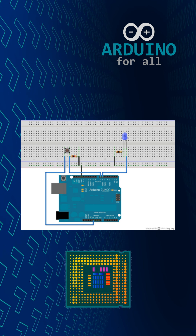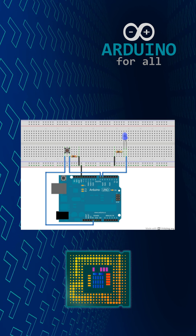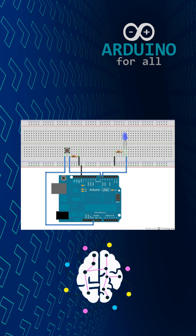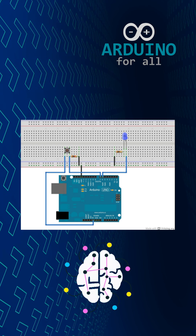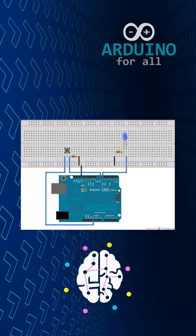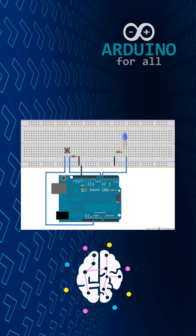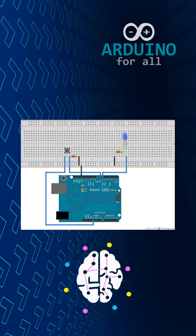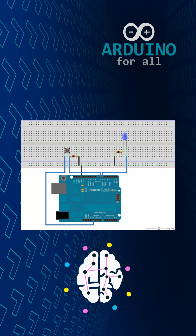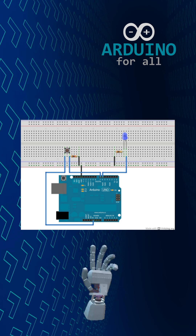When a pin is configured as an output, the microcontroller sends that signal. It writes a high or low voltage to the pin, which turns external components on or off, like LEDs, relays, or transistors.